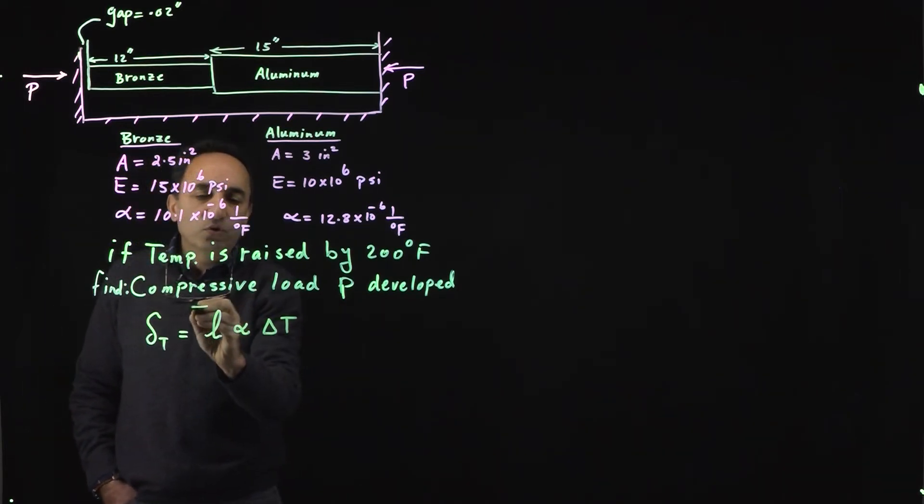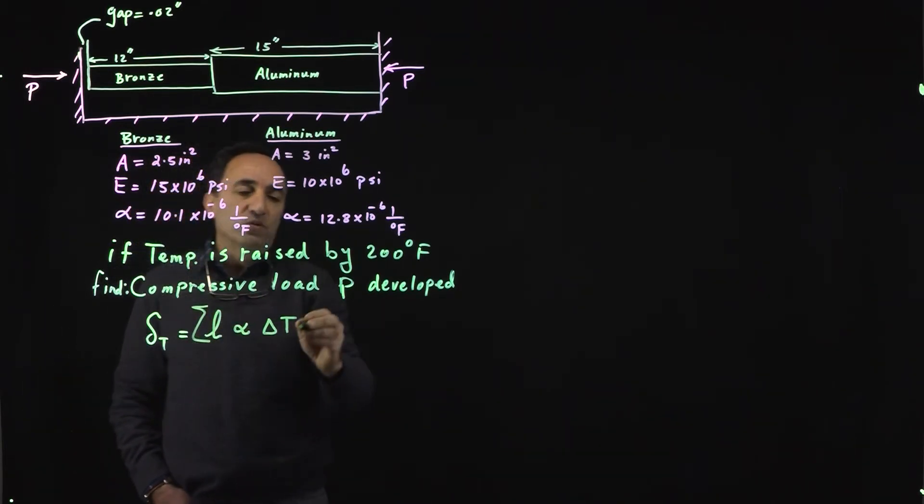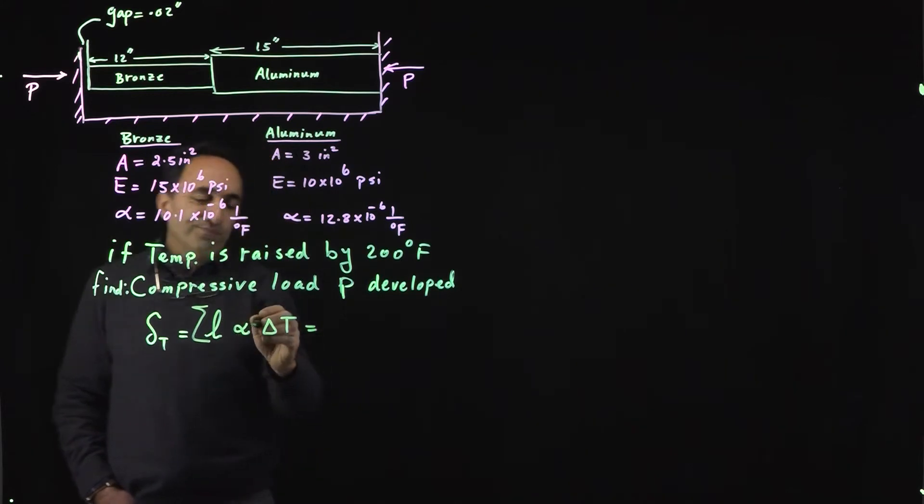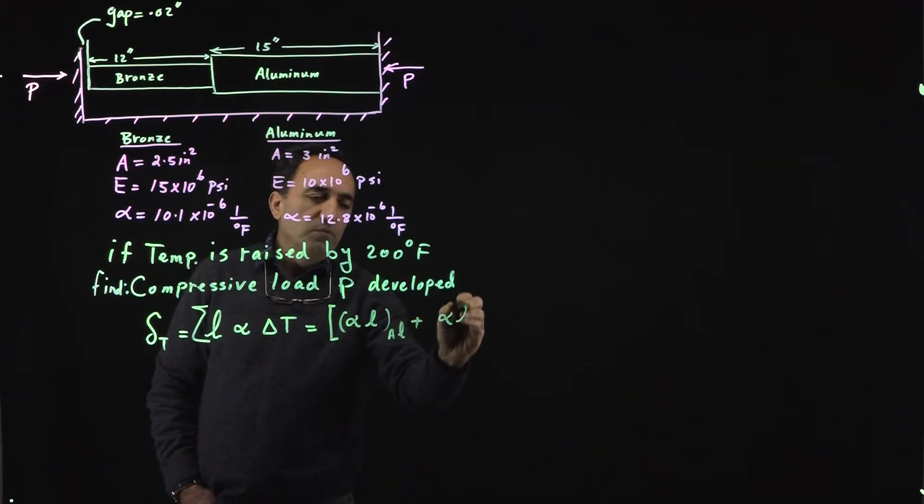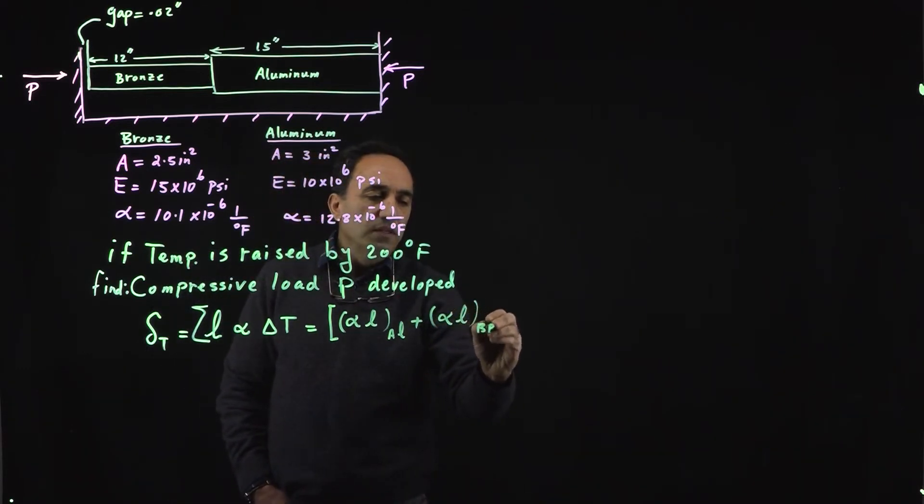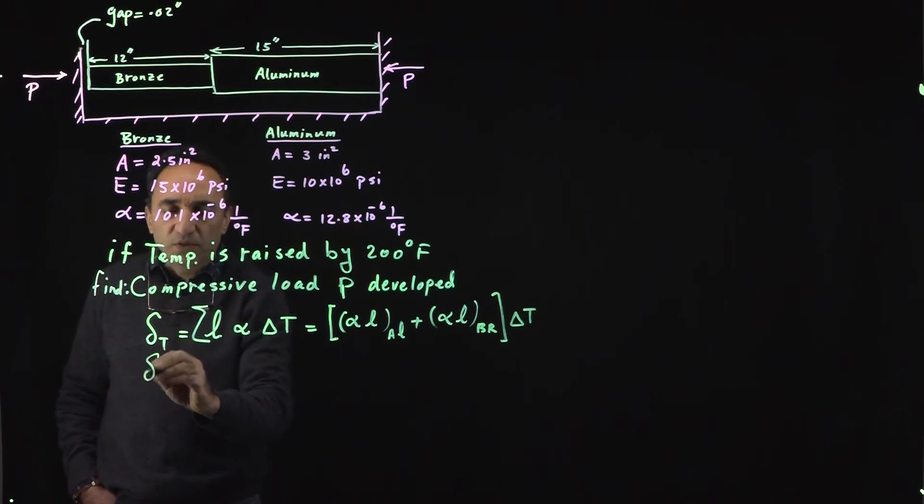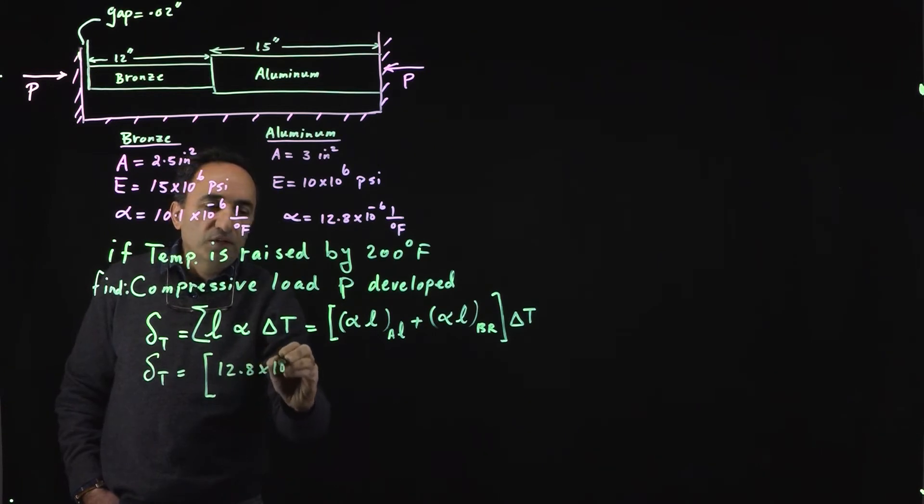Because we have two bars, you're going to use the summation form of this equation. Temperature is the same, so if you take temperature out you have alpha L for the aluminum plus alpha L for the bronze, and of course we are factoring out delta T. Let's go ahead and plug in the numbers that we have.